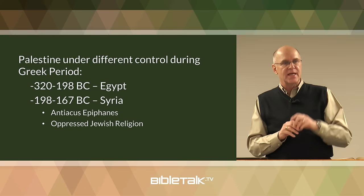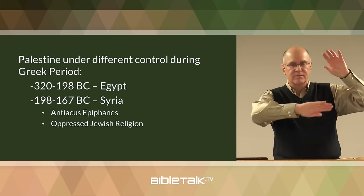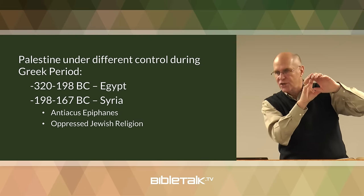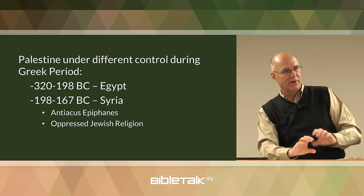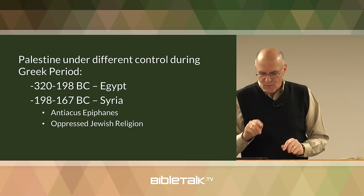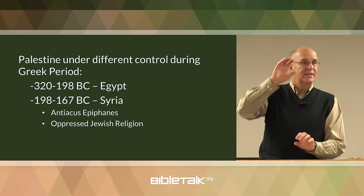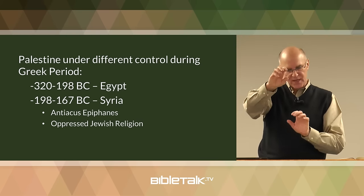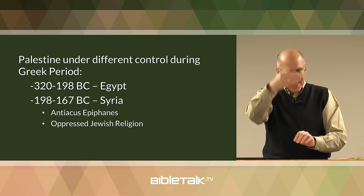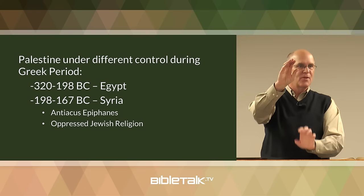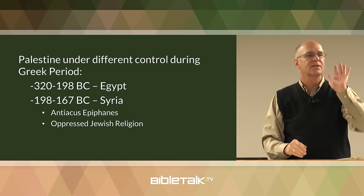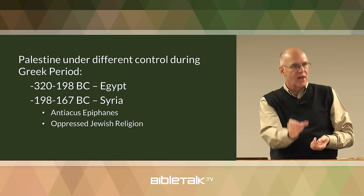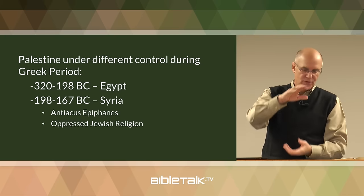From 320 to 198 BC, Egypt controlled Palestine. Then from 198 to 167 BC, Syria — the country to the north — gained control over that region. The reason the north and south were always fighting is that they wanted to control that piece of land as a buffer zone. It's always easier to fight a war on somebody else's turf — you destroy their homes, burn their crops. They always wanted that middle piece of land we call Israel.